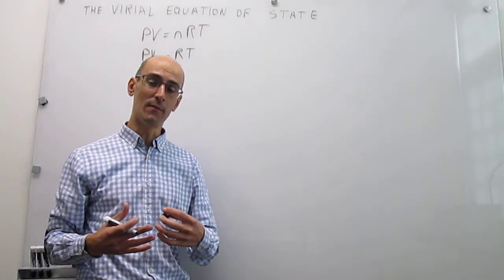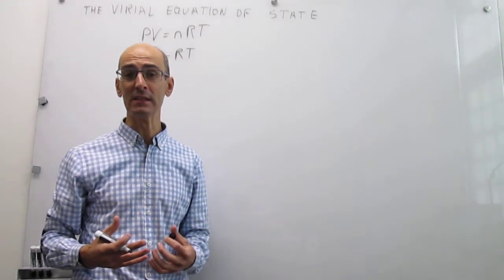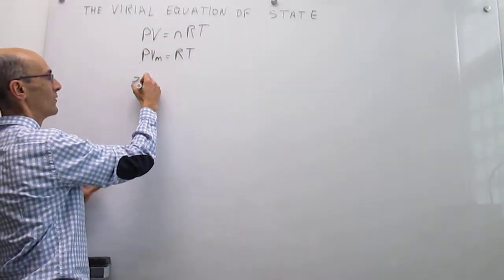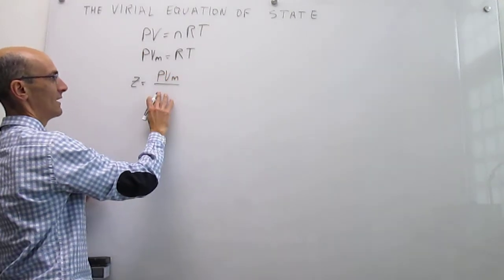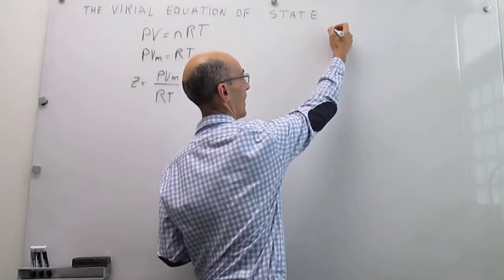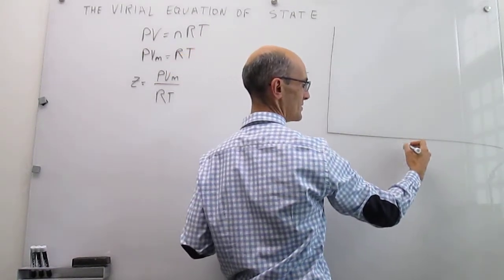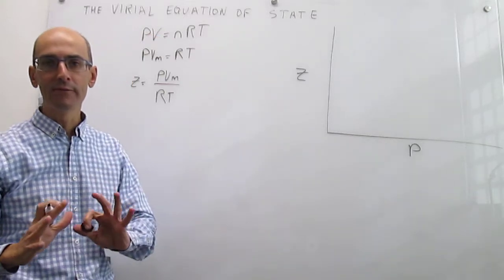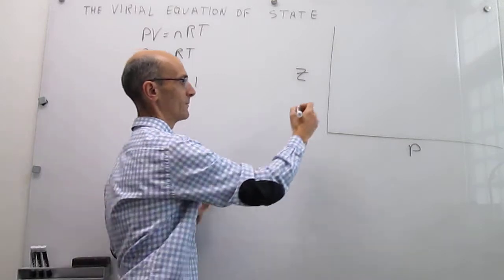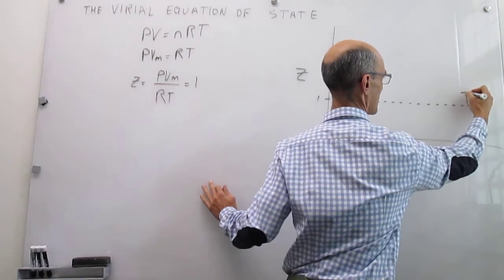A way that we have to determine how real gases deviate from ideality is by using something that we call the compression factor. The compression factor is simply the ratio of pressure times the molar volume divided by RT. So if we plot a graph of how the compression factor changes with pressure, notice that from the ideal gas equation of state this number should always be 1. That is the behavior that we would expect if the gas is ideal.